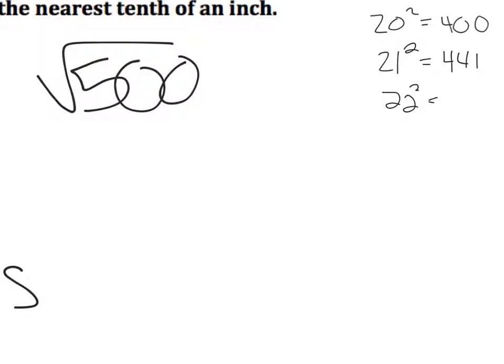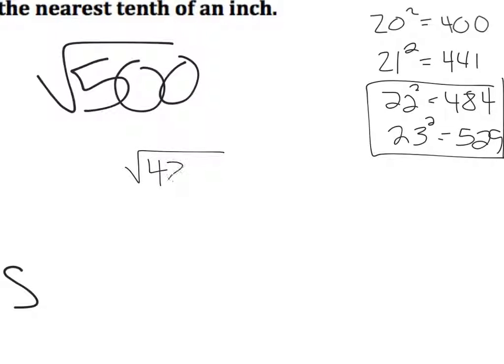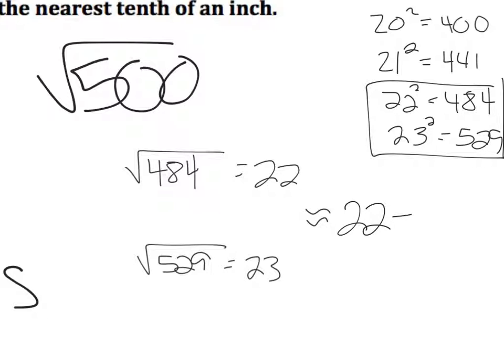22 squared would be 484. And 23 squared would be 529. So I can see that these two are going to be around the 500 mark. So I would say that the square root of 500 is in between the square root of 484 and the square root of 529. Those are perfect squares. I know the square root of 484 is 22, and the square root of 529 is 23, so the square root of 500 would be right in between there. So the square root of 500 would be 22 and then some fraction. We need to find that fraction.